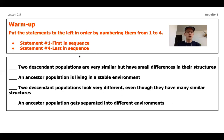On your paper, you're going to start off by writing these statements and then putting a number by them. The numbers are going to indicate the order in which those statements would happen for a species in their own evolutionary history. Number one is for the very first thing that happens, and number four is going to be the last thing — the most recent thing that would happen in their process of evolution.